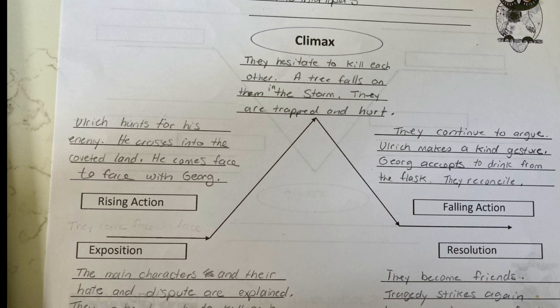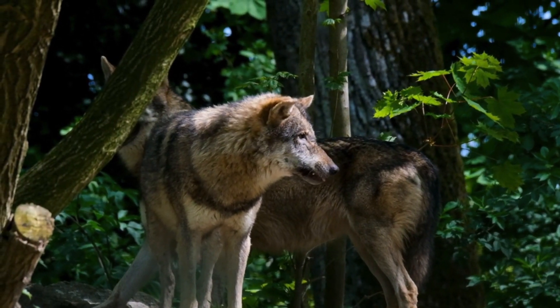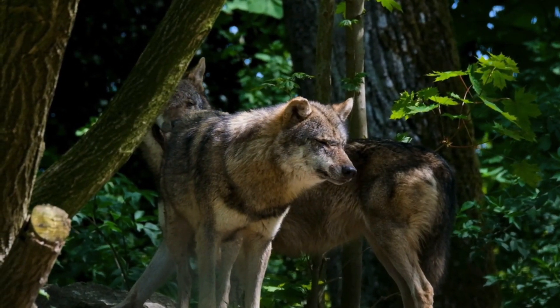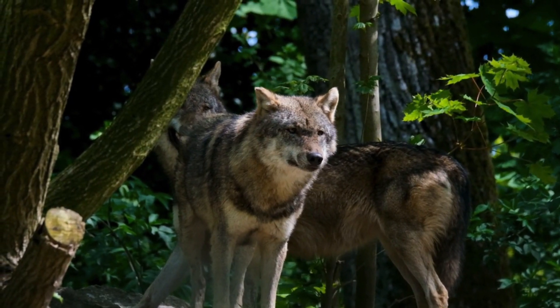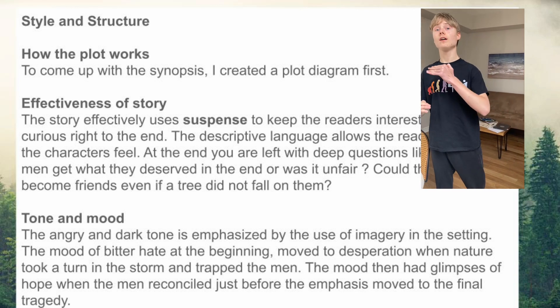I will now present the plot diagram. Exposition: the main characters and their hate and dispute are explained; they head out to kill each other in the dark night. Rising action: Ulrich hunts for his enemy, crosses into the coveted land, and comes face to face with Georg. Climax: they hesitate to kill each other; a tree falls on them in the storm and they are trapped and hurt. Falling action: they continue to argue, but Ulrich makes a kind gesture and Georg accepts to drink from the flask — they reconcile. Resolution: they become friends, but tragedy strikes again because wolves come for them instead of rescuers. This is the second time nature turns on them. The story effectively uses suspense to keep the readers interested and curious right to the end.